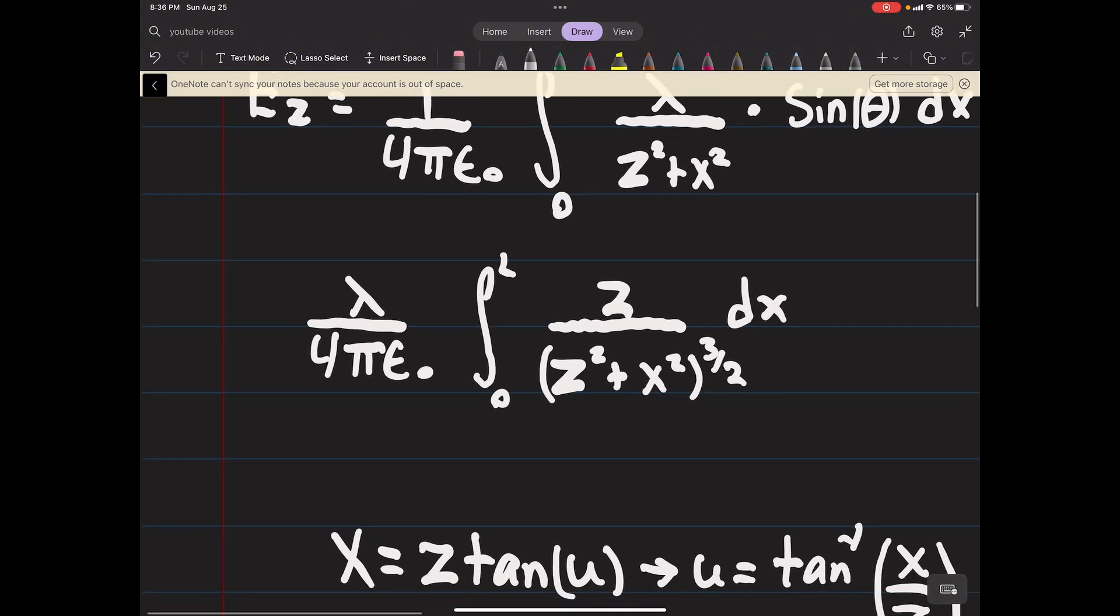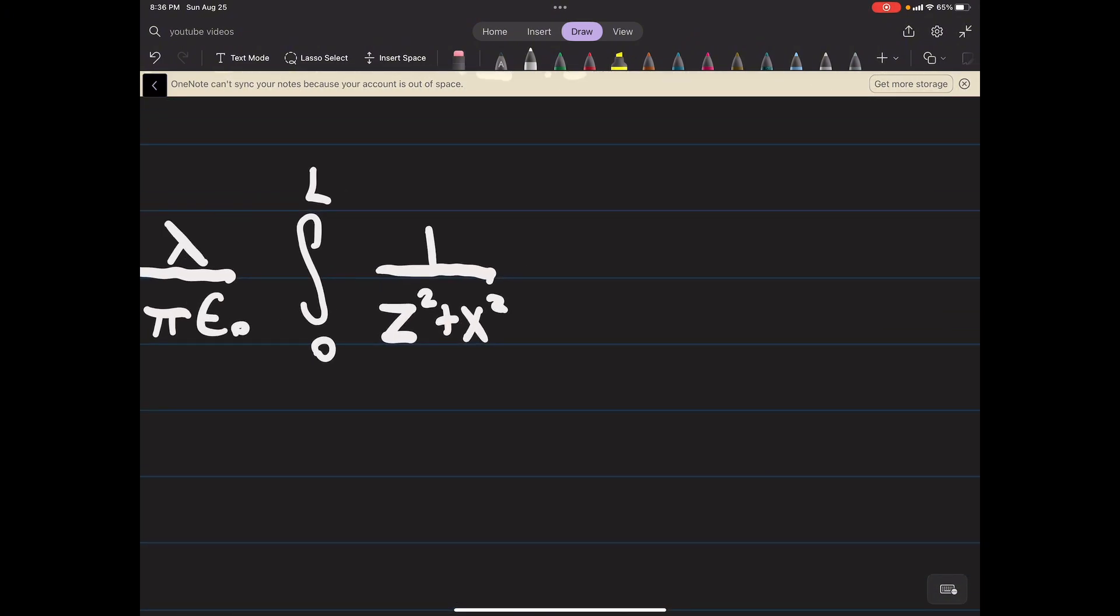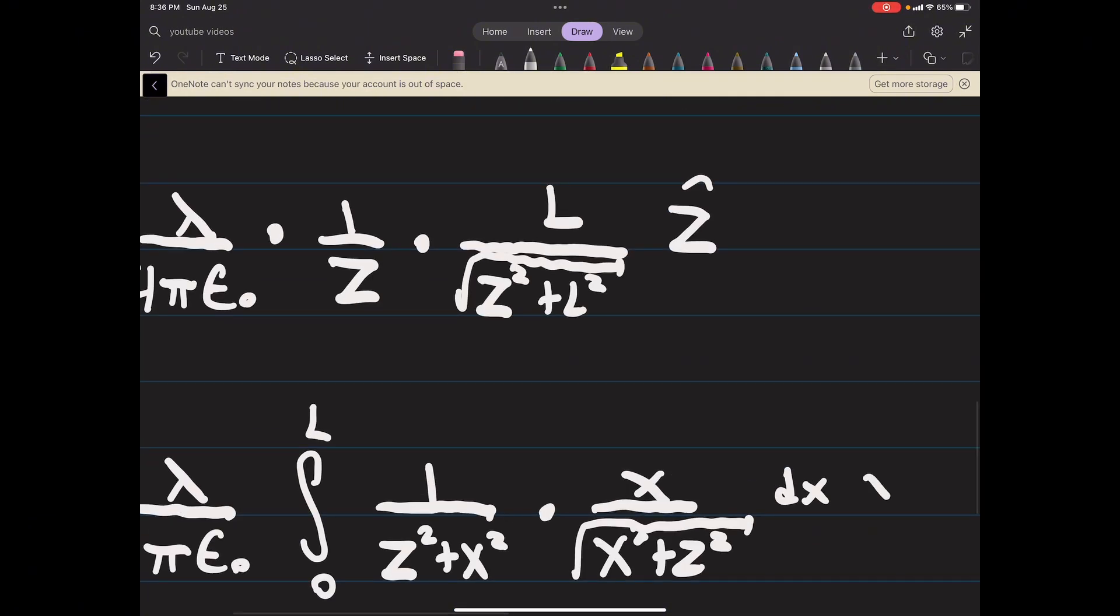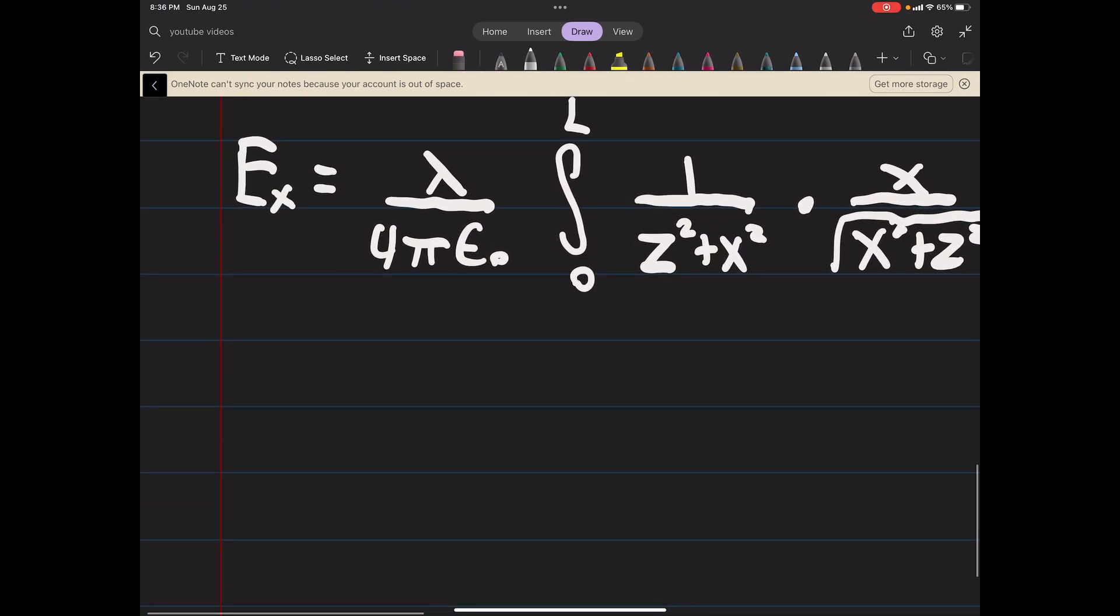Cosine of theta is going to be x over the square root of z squared plus x squared. So we're multiplying by that cosine part just to get the x part. We multiply by x over the square root of x squared plus z squared, dx, and this will be in the x hat direction.